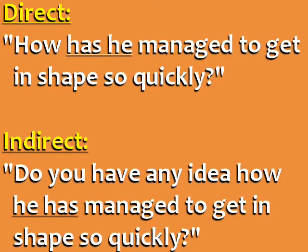Direct: 'How has he managed to get in shape so quickly?' Indirect: 'Do you have any idea how he has managed to get in shape so quickly?' The verbs have, has, and had also come after the subject in indirect questions.